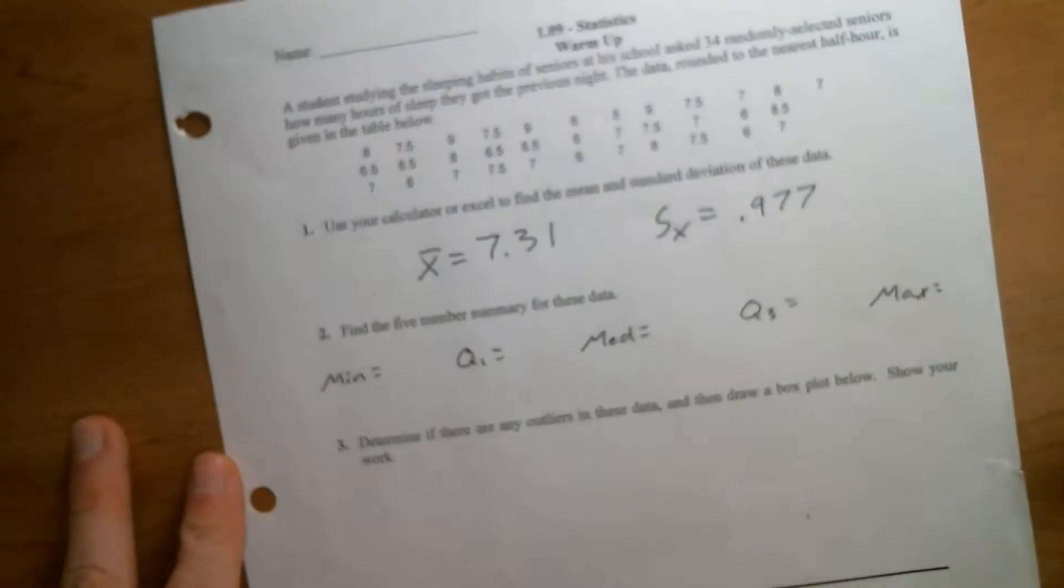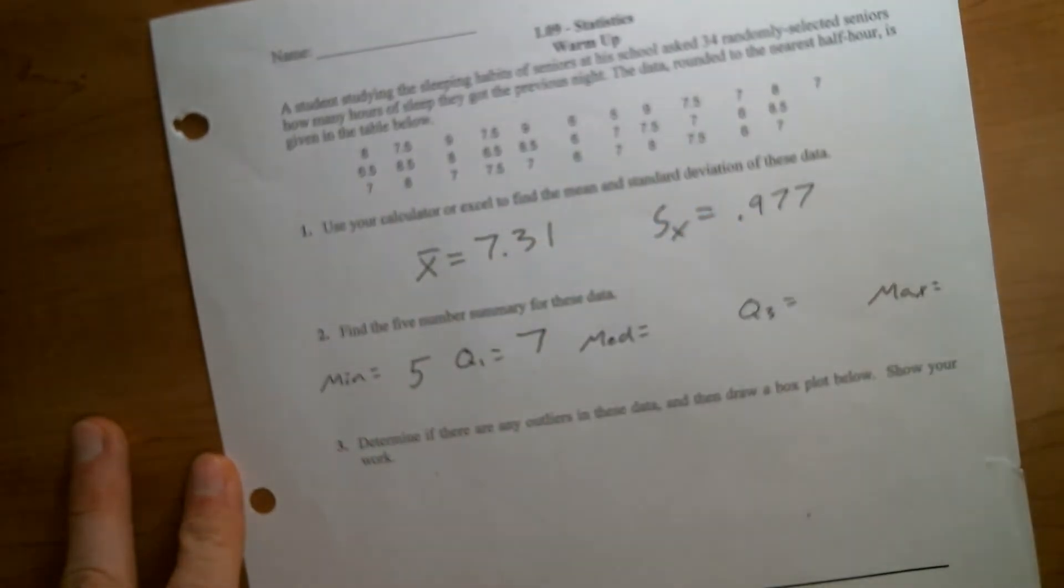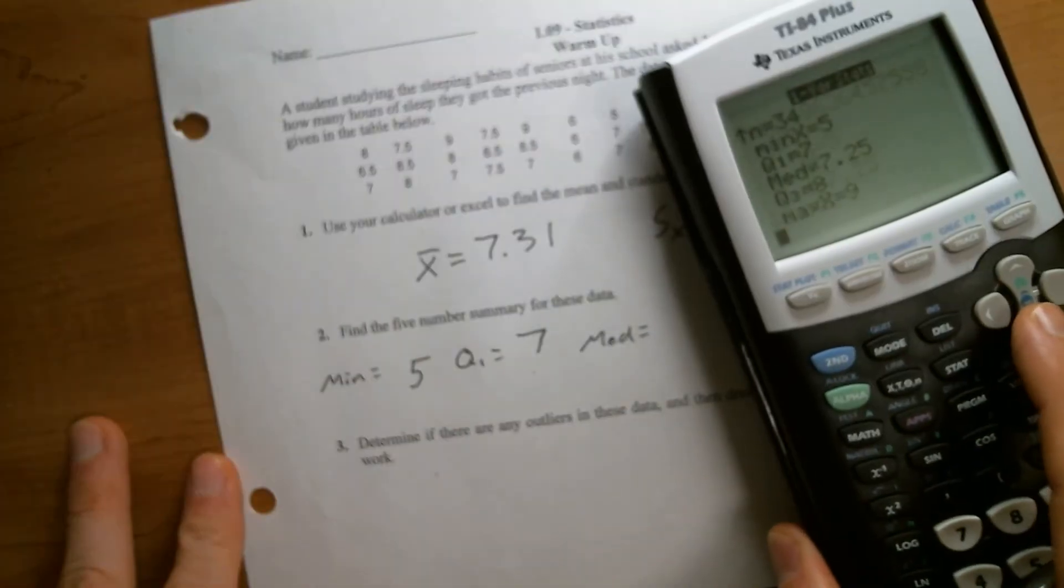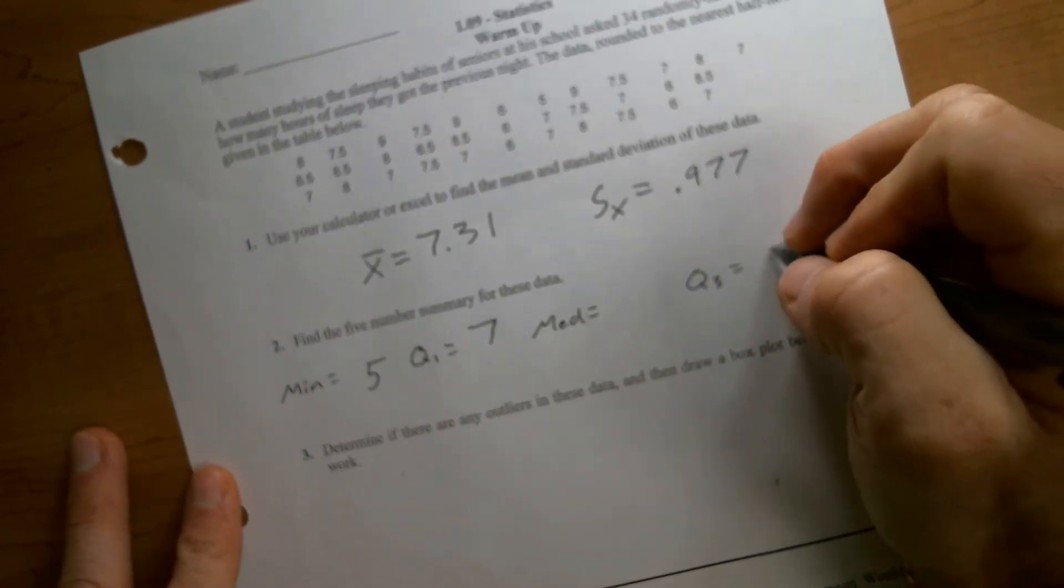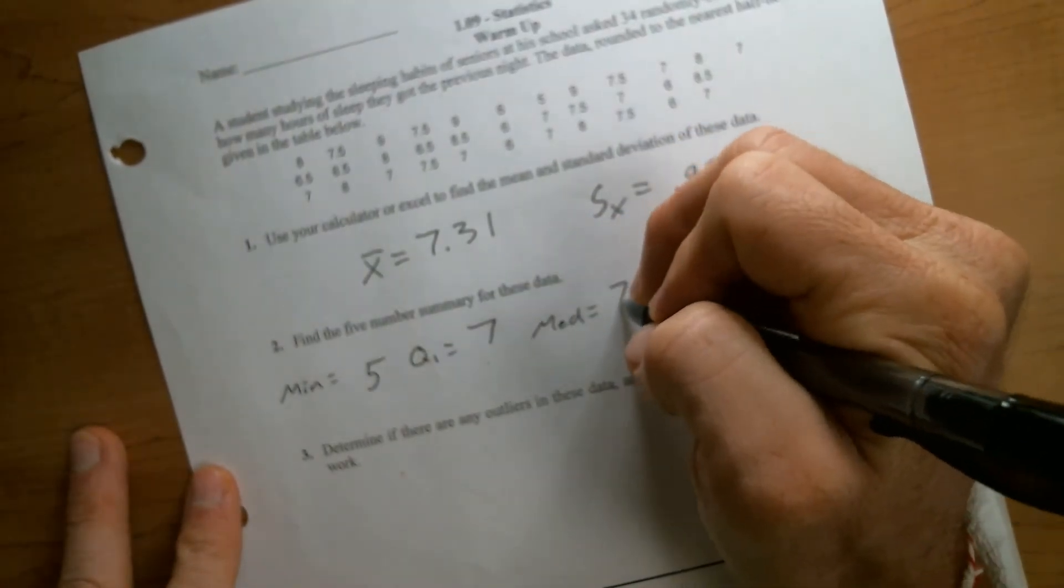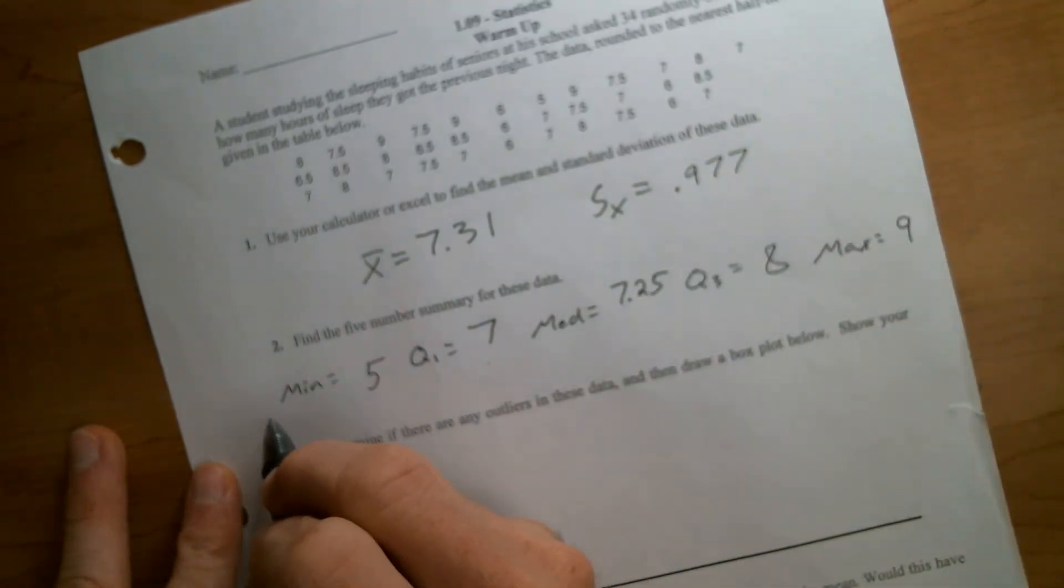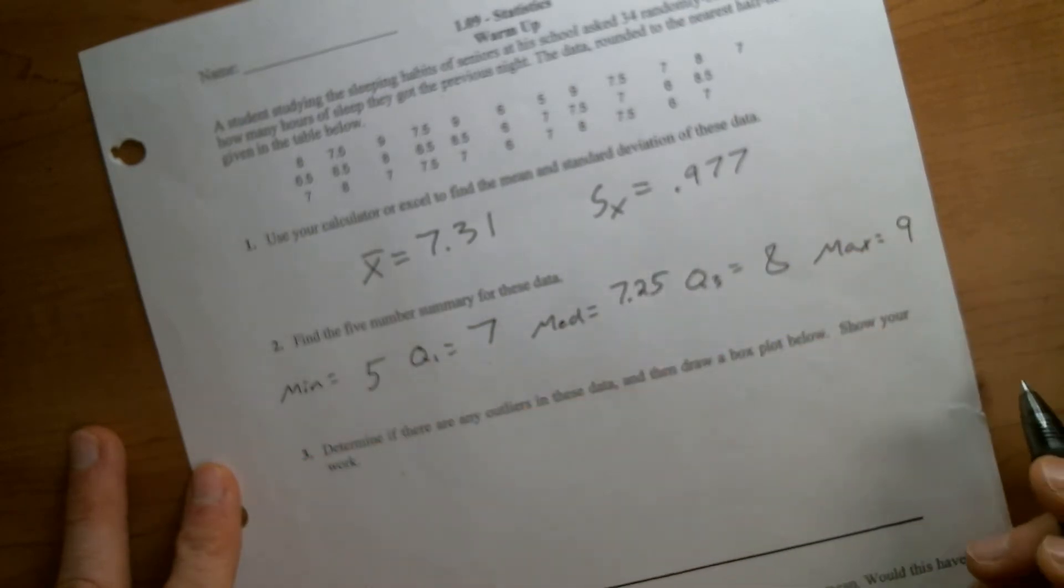So min is 5, quartile one is 7, median is 7.25, quartile three is 8, and max is 9.